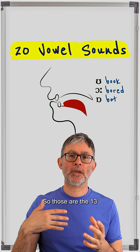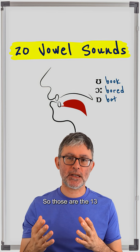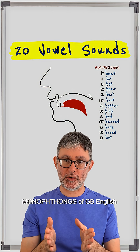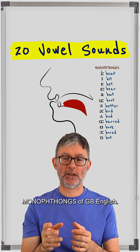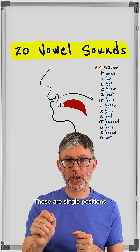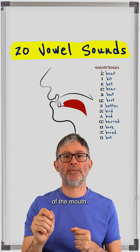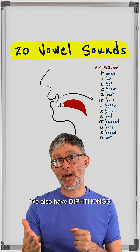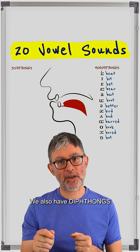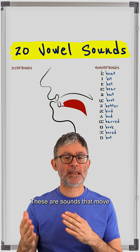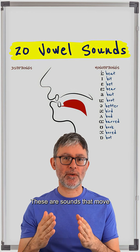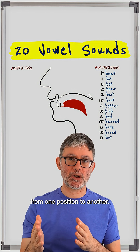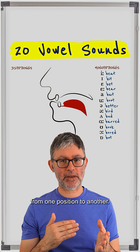So those are the 13 monophthongs of GB English. These are single positions of the mouth. We also have diphthongs — these are sounds that move from one position to another.